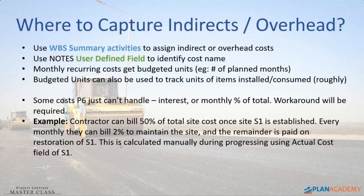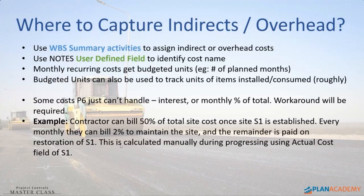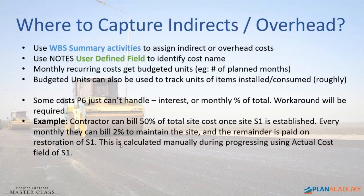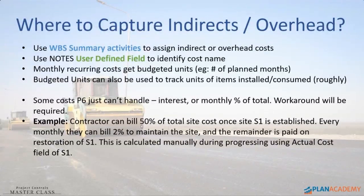In my project, the contractor for establishing site S1 — basically clearing the ground and putting up barriers — they can bill 50% of the total cost once it's established. But because they have to maintain that site throughout the duration of the project, the rules say they can bill 2% of the cost every month until the end of the project, where they restore the site and bill whatever was left. P6 is not going to model that at all. What we did is we could status it with 50%, and then increment the status 2% every month for actuals — but we couldn't model it in terms of planned work; it's just too hard.